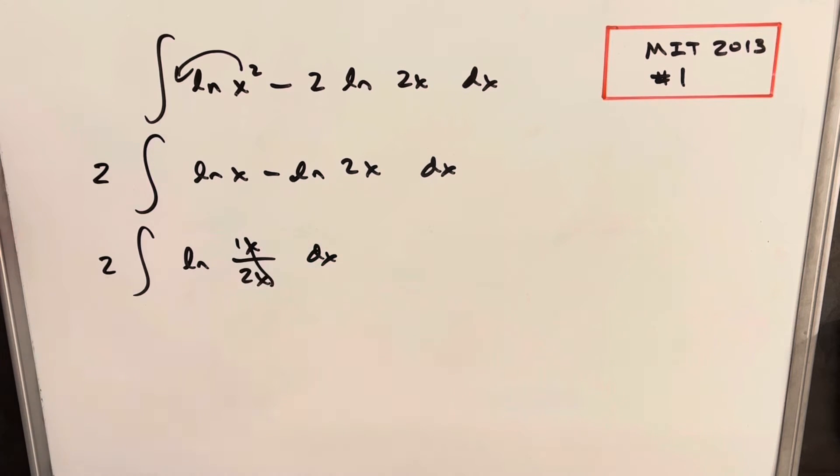Now our x's are going to cancel, and we just have ln 1 half, but now ln 1 half is just a constant value. We could bring this out front of the integral, or we don't have to.